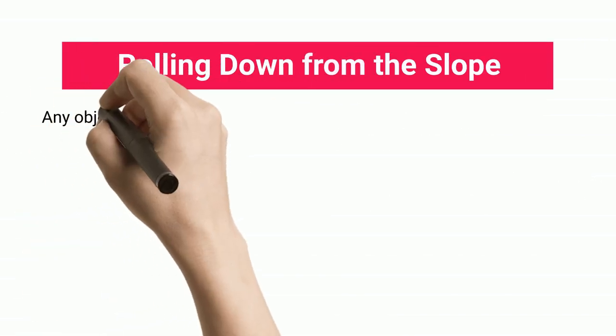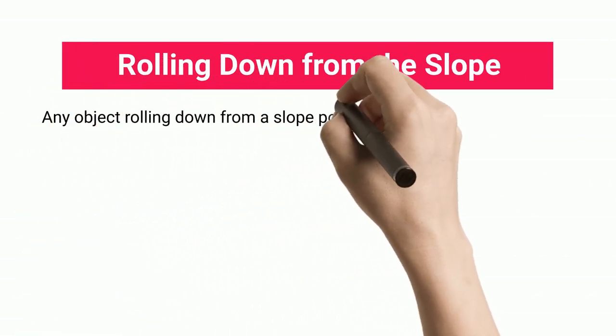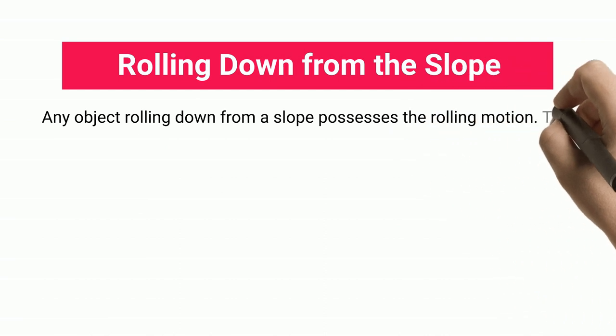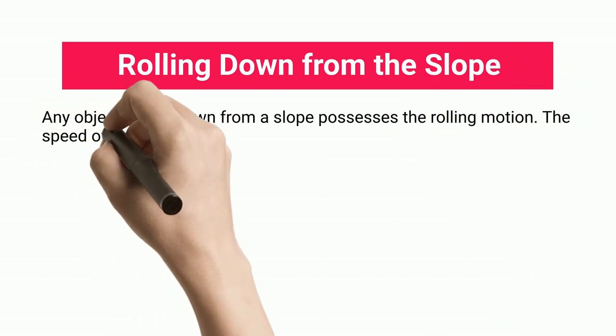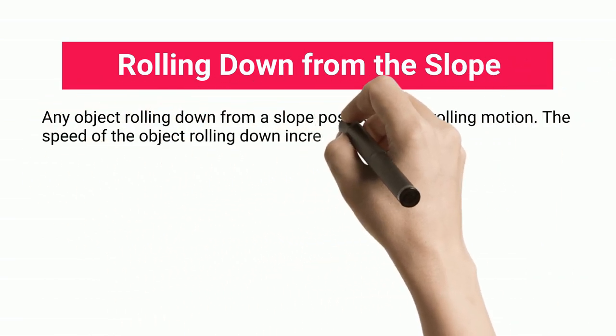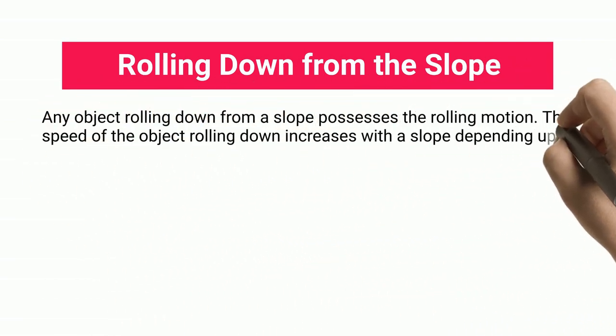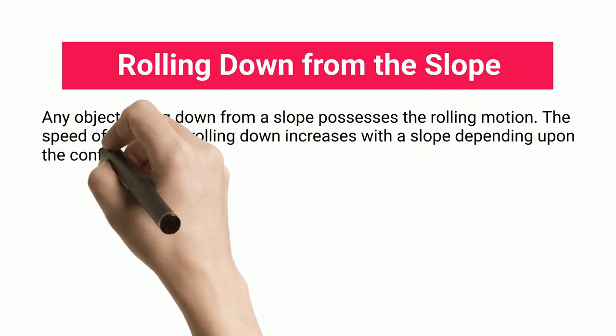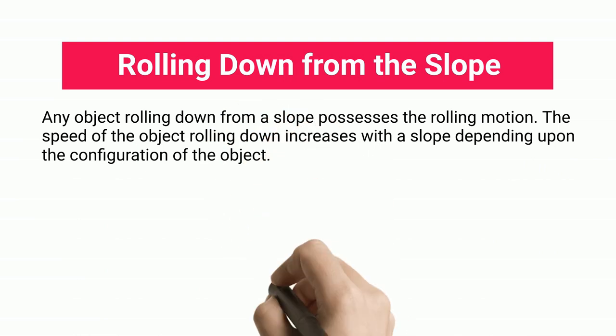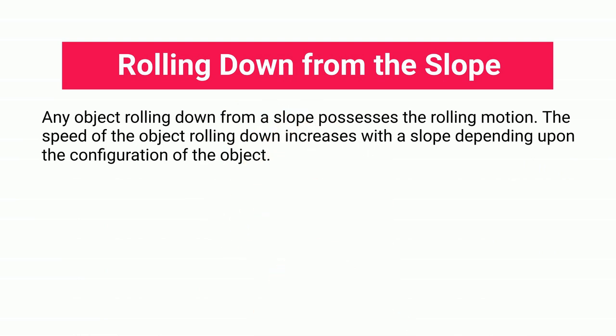Rolling down from the slope. Any object rolling down from a slope possesses rolling motion. The speed of the object rolling down increases with the slope, depending upon the configuration of the object.